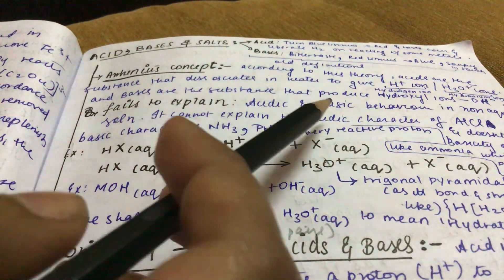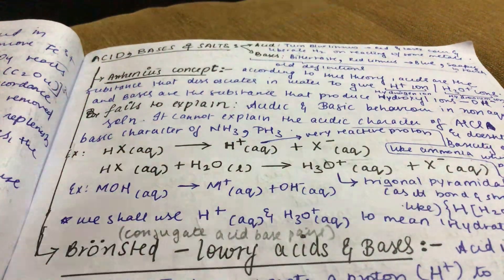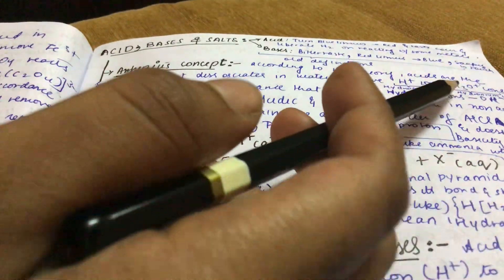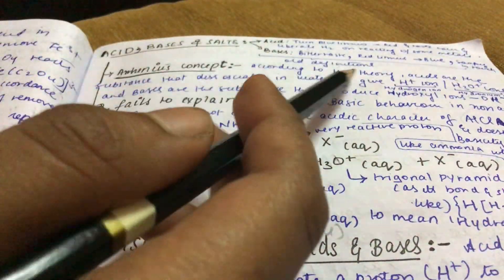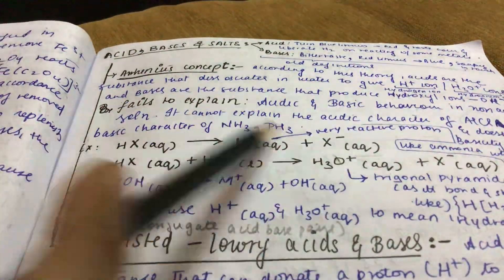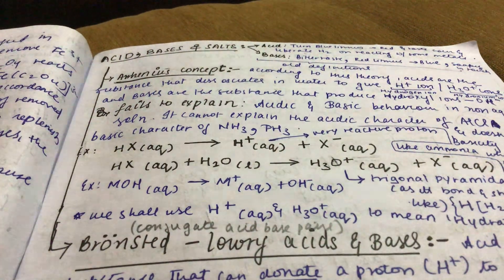It cannot explain the acidic character of AlCl3 and basic character of NH3, PH3. According to this theory, acidic substances dissociate in water to give H plus ion as acid and OH minus ions as base, but in non-aqueous solution not in water, the acid-basic nature can't be explained by this theory.